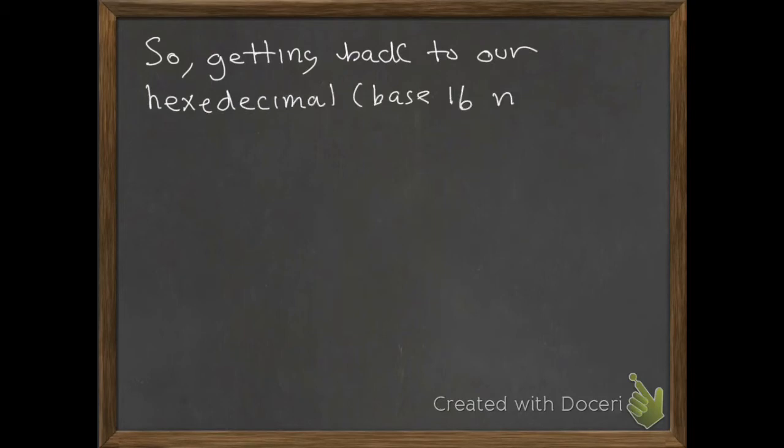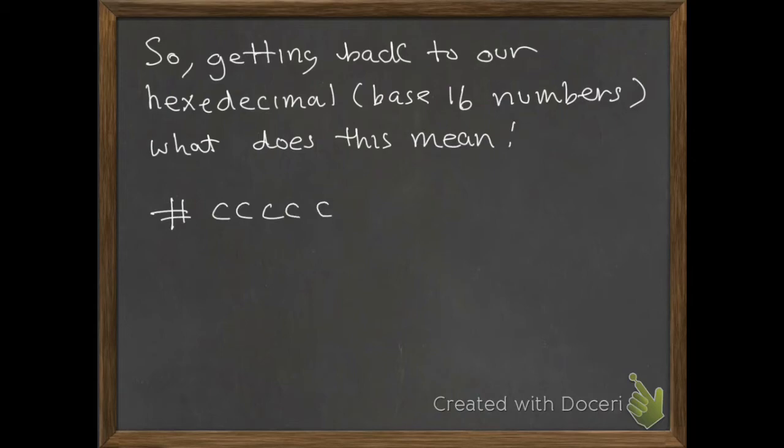Getting back to our hexadecimal base 16 number, what does this mean? Hash CC, CC, CC. Again, we have red, green and blue. We have three numbers. The first two CCs represent the red, the second two CCs represent the green, and the third group represents the blue. And again, this is a grey. We have equal amounts of each colour.